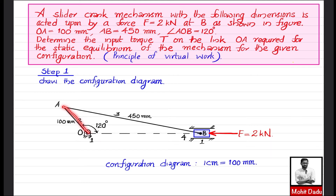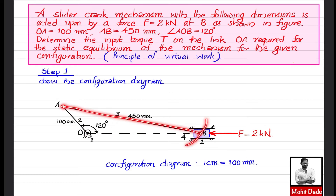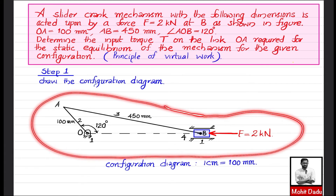Draw the horizontal slider line, where connecting rod AB cuts it at 450 mm from point A — make an arc to find point B, giving the slider position. An external force of 2 kN acts on the slider. We need to find the input torque T on link OA. Using T = −F·v_slider / ω_crank, we must construct the velocity diagram.